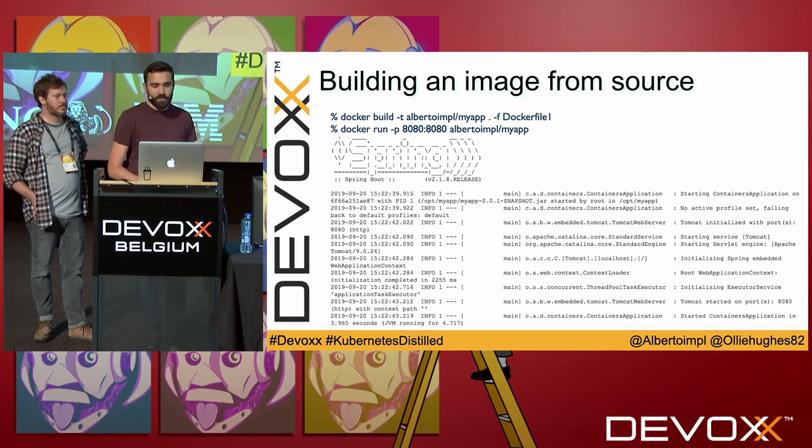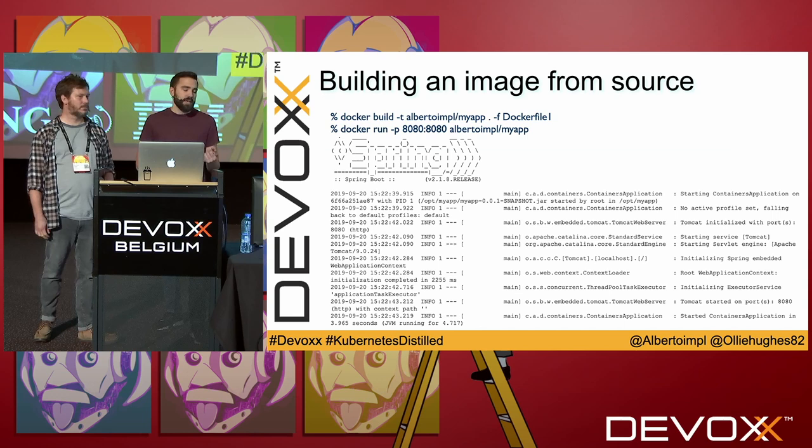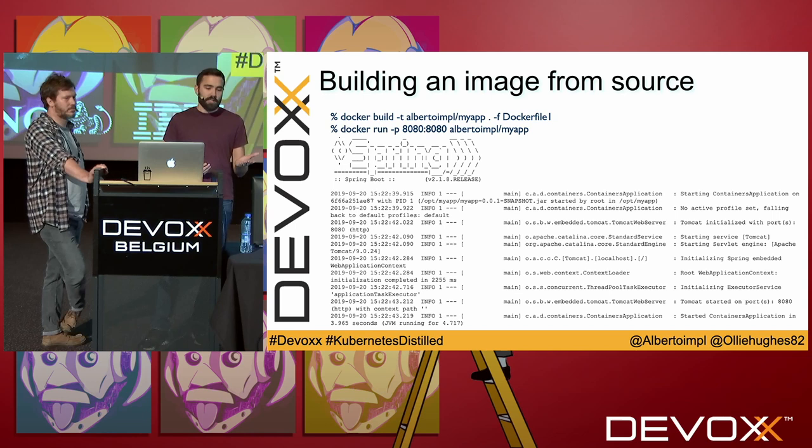With that in mind, let's build the first image. The first command is to build it, the second to run it. You specify the tag you want to use, the file you want to use, and the output when you run it locally is what you'd expect from any Spring Boot app.